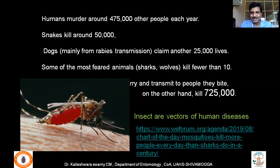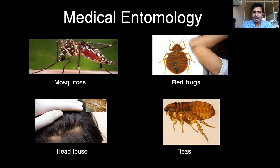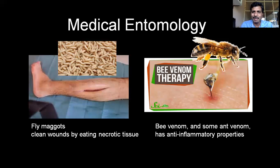Not just mosquitoes — bed bugs, fleas, and lice are also frequently associated with human beings, transmitting diseases responsible for the mortality of more than one million people globally. Fleas were once a very important transmitter of bubonic plague; whenever it occurred in India, people would vacate entire villages for 2-3 months. However, insects have also been exploited in medical entomology — fly maggots clean wounds by eating necrotic tissue, and venom from bees and ants has been used to treat arthritis.